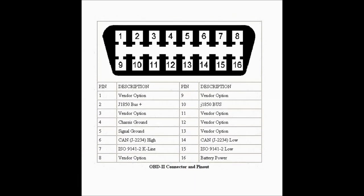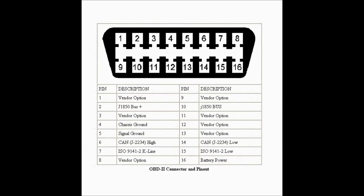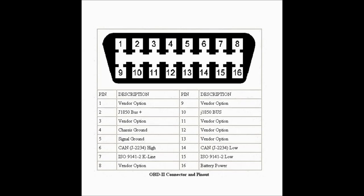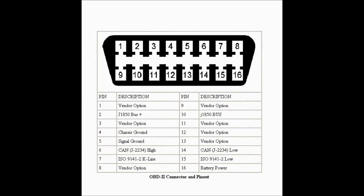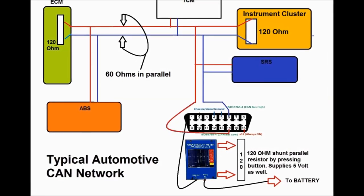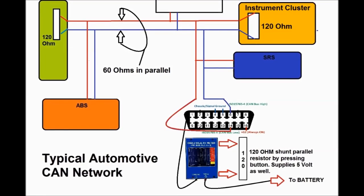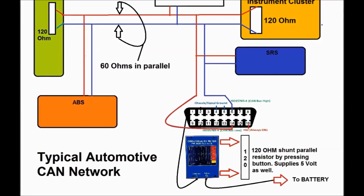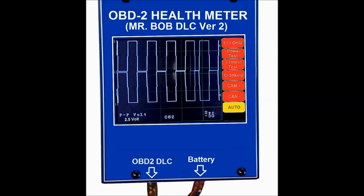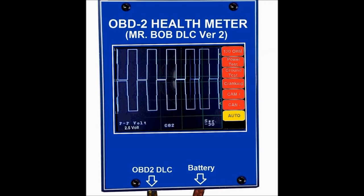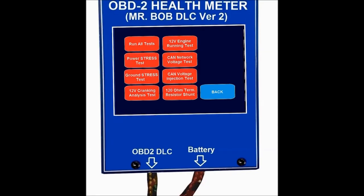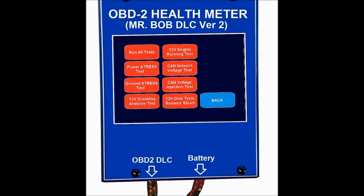Pin number 6 and 14 are the ones that carry the CAN signal — they're mandated by law. Every vehicle must have pins 6 and 14 running CAN. There are also slow CAN and different variations running on other pins, but we'll concentrate on the CAN mandated by OBD2. The OBD2 Health Meter is a dedicated unit we designed and developed, very handy for OBD2 diagnostics, testing power and grounds, and so on.